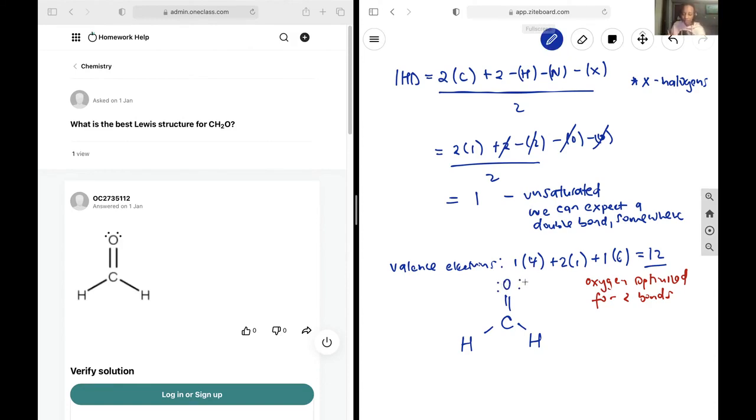And then we count them down again to 2, 4, 6, 8, 10, 12. Perfect. Carbon has a filled octet, oxygen has a filled octet, hydrogen and the other hydrogen are both satisfied, meaning that this is going to be the best Lewis structure for this molecule.